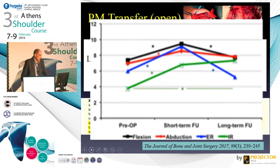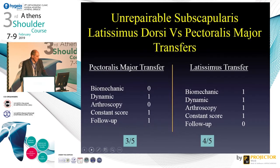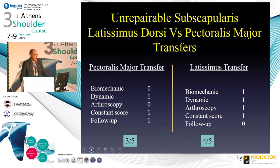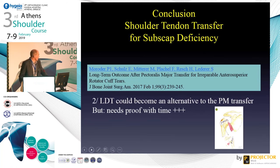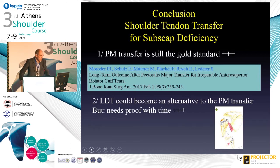After 10 years you have improvement of active internal rotation, so the pec major transfer works - we cannot say it doesn't. Now to compare the two techniques: biomechanically the lat dorsi transfer is better. Looking at the dynamic aspect, publications show both transfers work. It is possible to make the lat dorsi transfer arthroscopically; the pec major, I'm not sure. The constant score is the same at revision for both techniques. The follow-up is better for the pec major because the only publication has more than 10 years of follow-up, so the lat dorsi right now cannot be declared the best one. In conclusion, today the pec major is still the gold standard because it works very well with more than 10 years of follow-up via an open procedure, but the lat dorsi could be an alternative - we are waiting for more publications. Thank you very much.